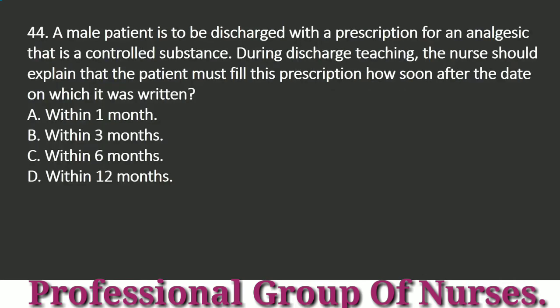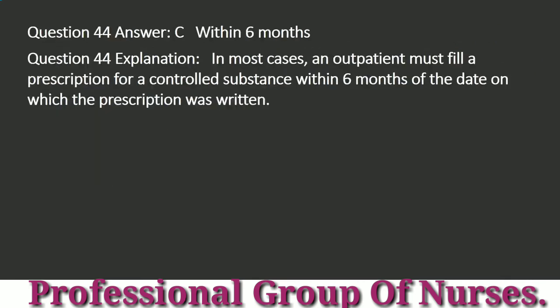Question 44: A male patient is to be discharged with a prescription for an analgesic that is a controlled substance. During discharge teaching, the nurse should explain that the patient must fill this prescription how soon after the date on which it was written? a. Within 1 month. b. Within 3 months. c. Within 6 months. d. Within 12 months. Answer: c. Within 6 months. Explanation: In most cases, an outpatient must fill a prescription for a controlled substance within 6 months of the date on which the prescription was written.